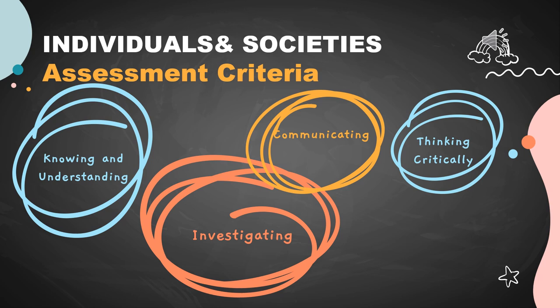Moving on to the assessment criteria: the objectives of any MYP subject state specific targets and define what the student will be able to accomplish as a result of studying the subject. Four criteria will be taken into consideration. Number one is knowing and understanding, which highlights knowledge and understanding when answering questions related to the content, using correct terms, examples, and explanations relevant to the question.